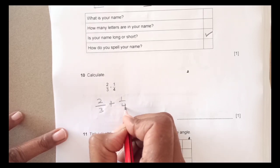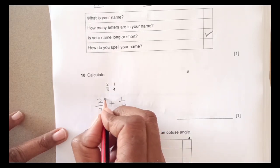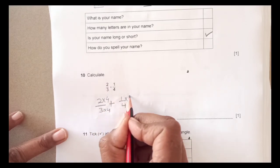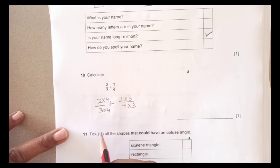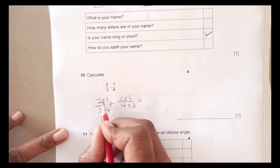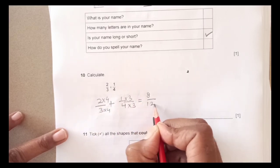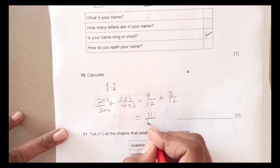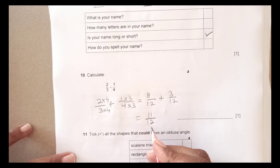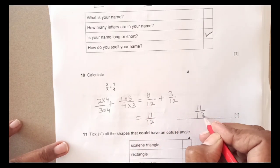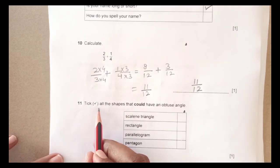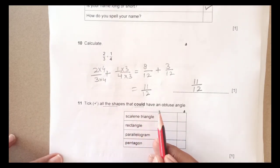Question 10: 2 over 3 plus 1 over 4. We need the same denominator, so multiply the first fraction by 4 over 4 and the second by 3 over 3. This gives 8 over 12 plus 3 over 12. Since the denominators are the same, 8 plus 3 is 11, so the answer is 11 over 12.